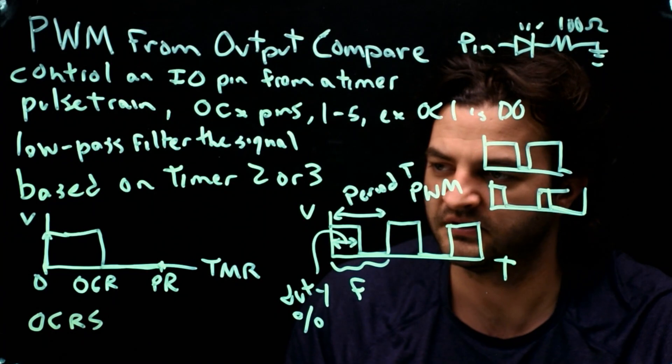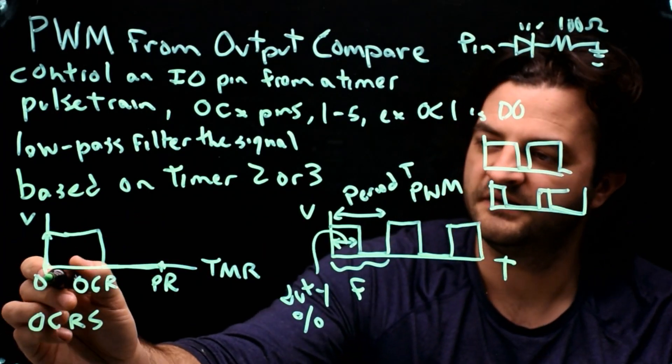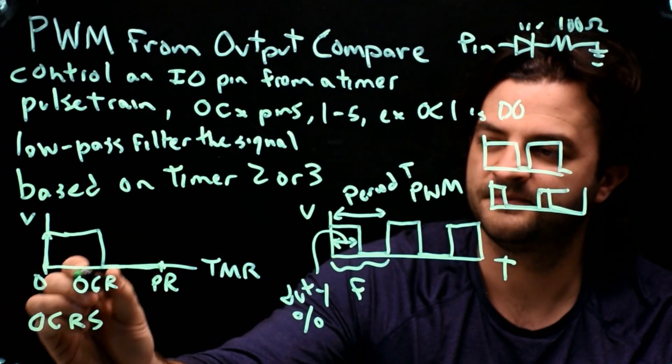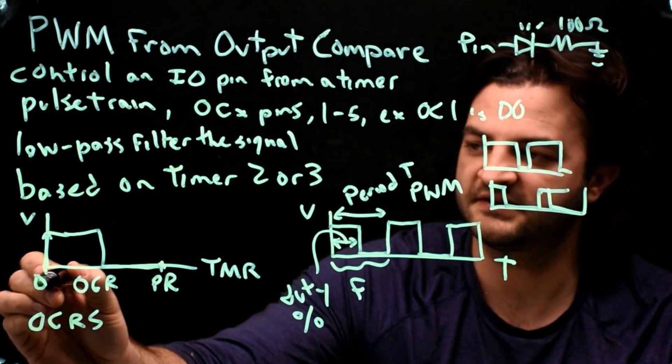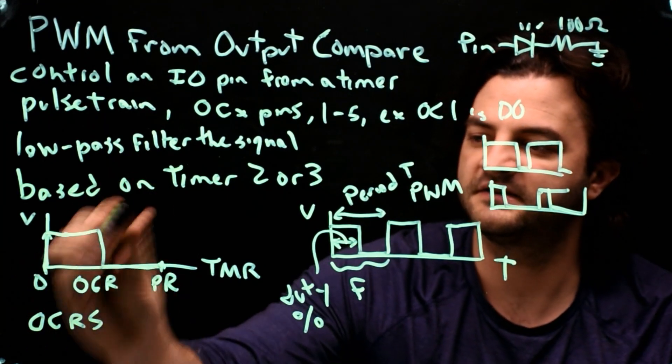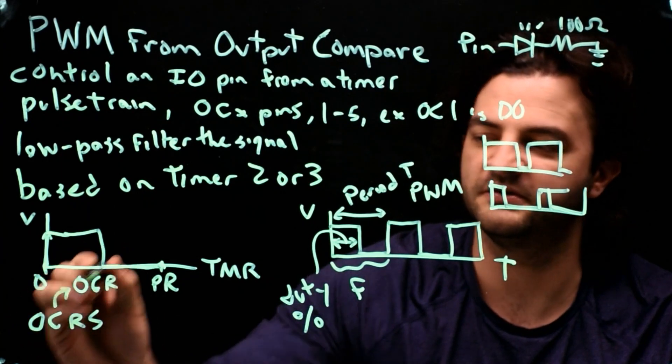And the way we control the duty cycle is not actually by setting the OCR register. It's by setting a register called OCRS. Now, why do we do OCRS instead of OCR?